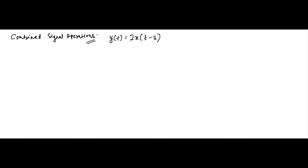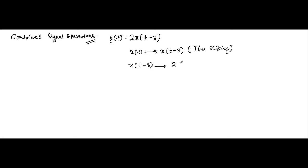This is a combined signal operation — it involves two signal operations performed on a signal. First, the original signal x(t) is subjected to time shifting. Then, this time shifted signal is subjected to amplitude scaling — it is multiplied by 2.